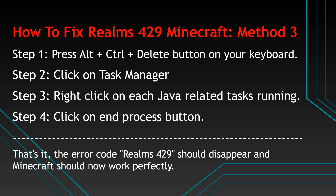How to fix Realms 429 Minecraft, Method 3. Step 1: press Alt + Ctrl + Delete on your keyboard. Step 2: click on Task Manager. Step 3: right-click on each Java-related task running. Step 4: click on the End Process button. That's it — the error code Realms 429 should disappear and Minecraft should now work perfectly.